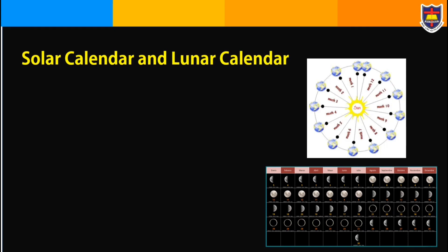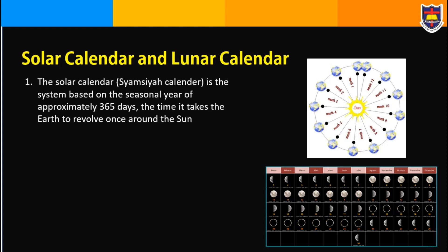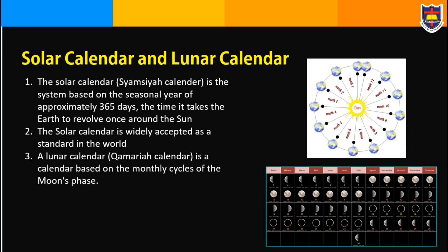The solar calendar, or Shamsia calendar, is a system based on the seasonal year of approximately 365 days — the time it takes the Earth to revolve once around the sun. The solar calendar is widely accepted as a standard worldwide. A lunar calendar, or Qamariya calendar, is a calendar based on the monthly cycles of the moon's phases.